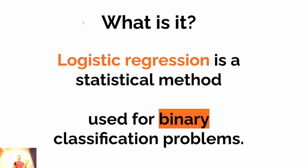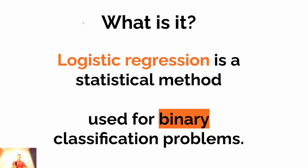Both answers were correct in their own way. The key takeaway: logistic regression only gives one number — in this case, the probability of the image containing a dog, which could be 85%, 15%, 25%, etc. We then utilize that number to calculate the inverse probability. It's an inverse relationship.